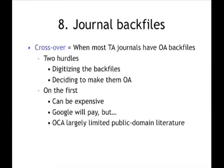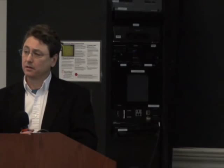This crossover point will come when most toll access journals have open access back files. For this purpose, I don't really care if the moving wall is six months, one year, or three years — as long as they've digitized their back files and made them openly available. There are two problems: it's hard to digitize back files, especially for an old journal with many back issues, and then the journal has to decide to make them open access. Google will pay to digitize the back issues of a journal, but the terms of the deal are not very good — Google doesn't give the journal a copy of the digital file. When a library lets Google digitize its books, the library does tend to get a copy, but journals who participate in this program don't even get a copy. That's slowing down uptake.